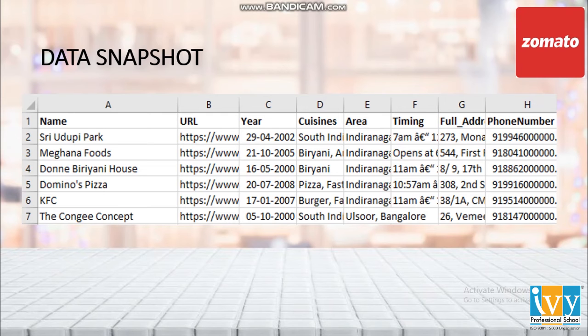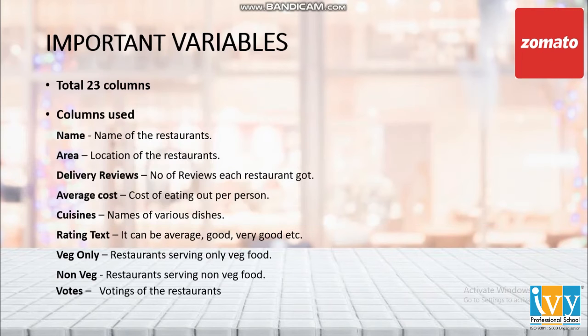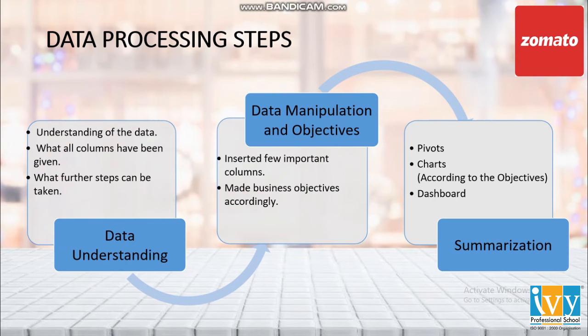This was the data snapshot and important variables used in the analysis. Now come the data processing steps. The first step was data understanding — understanding the data and all columns provided. Then data manipulation was done and objectives were made accordingly. In the data manipulation, a few important columns and variables were inserted for use in the analysis. After that, pivots, charts, and a dashboard were created.